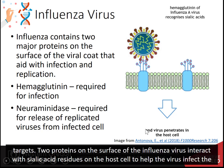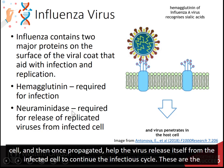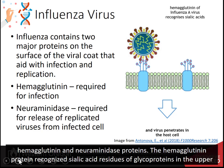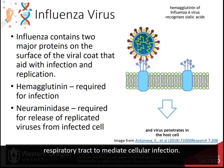Two proteins on the surface of the influenza virus interact with sialic acid residues on the host cell to help the virus infect the cell, and then, once propagated, help the virus release itself from the infected cell to continue the infectious cycle. These are the hemagglutinin and neuraminidase proteins. The hemagglutinin protein recognizes sialic acid residues of glycoproteins in the upper respiratory tract to mediate cellular infection.